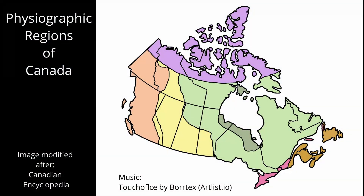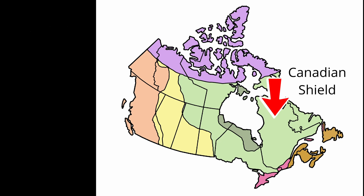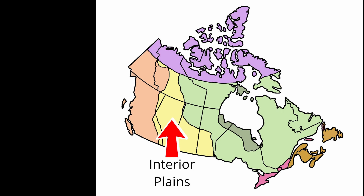Let's start with a brief review of the physiographic regions of Canada. This image provides a simple illustration of the physiographic regions of Canada. In this video, we are concerned only with the transition off the Canadian Shield onto the interior plains of Canada. The red line shows the path we followed when we left Ontario and entered the province of Manitoba.